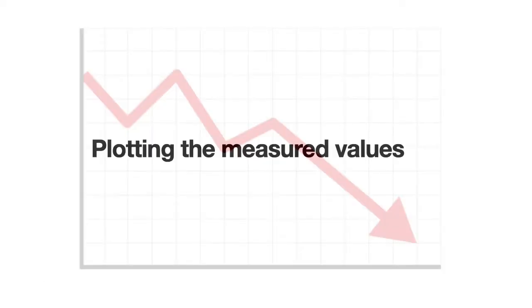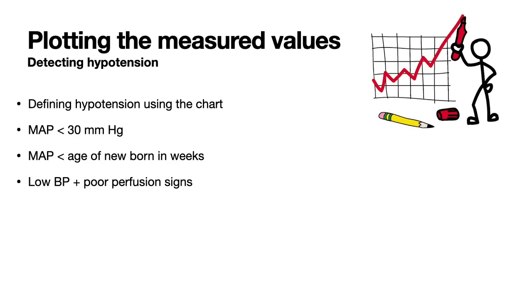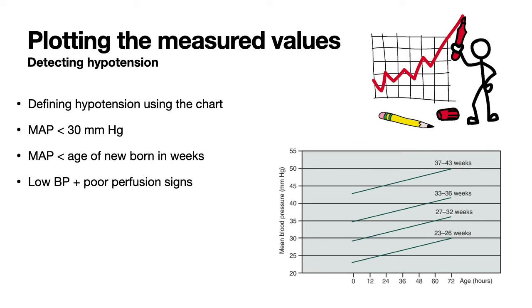One should take at least three readings before commenting on the final status. Once BP is correctly measured, we use a nomogram of mean arterial pressure in the newborn up to 72 hours of life with respect to gestational age. Simply remember: if at any time the mean arterial pressure is below 30 or below the gestational age of the newborn in weeks, it is considered hypotension. For example, a preterm neonate of 32 weeks with a MAP below 32 roughly indicates hypotension.